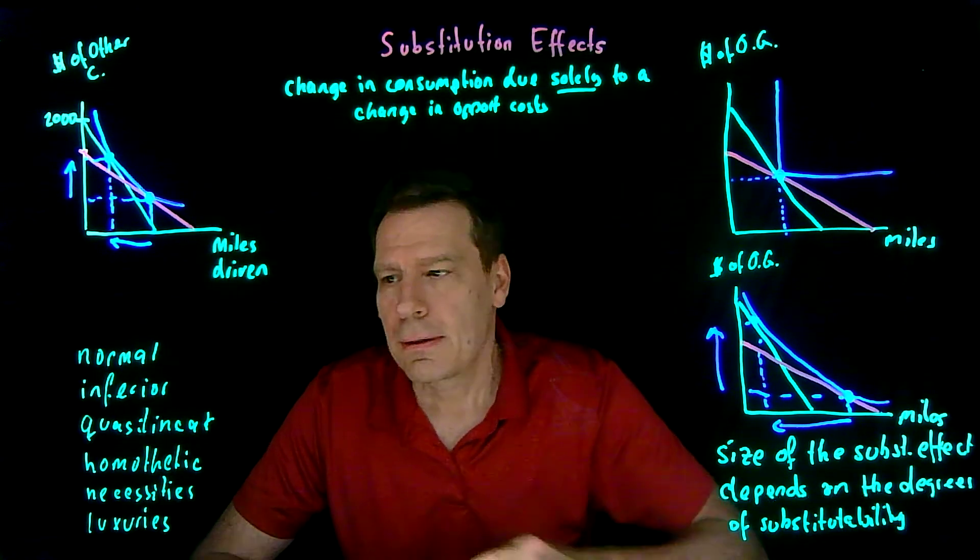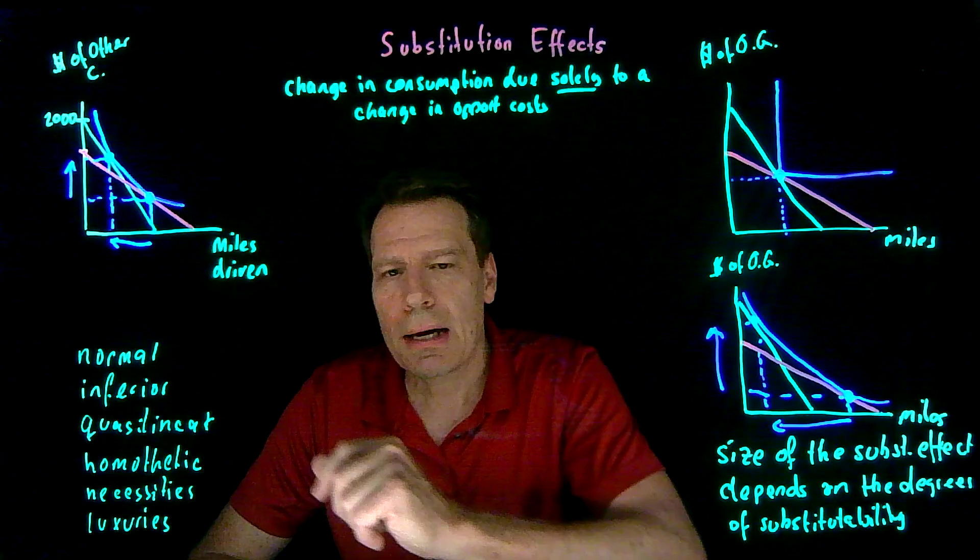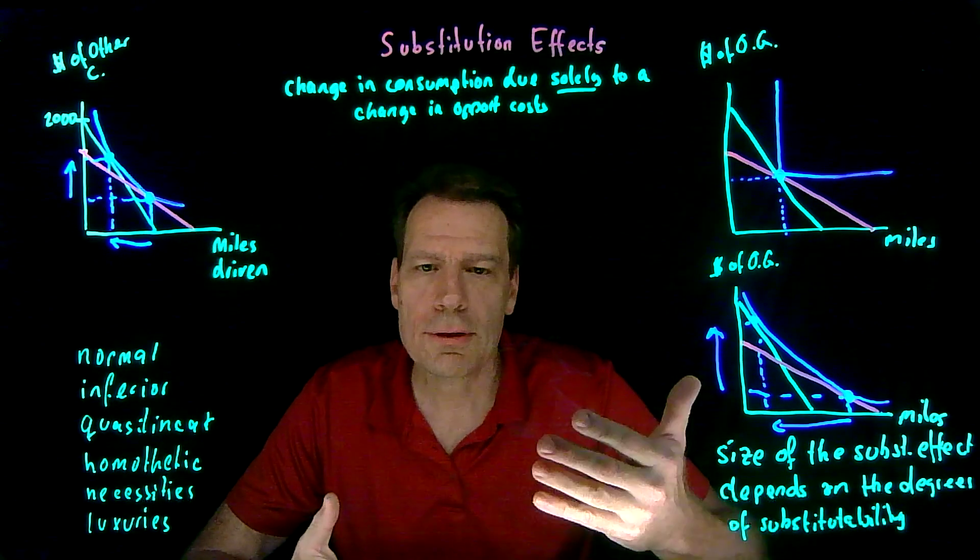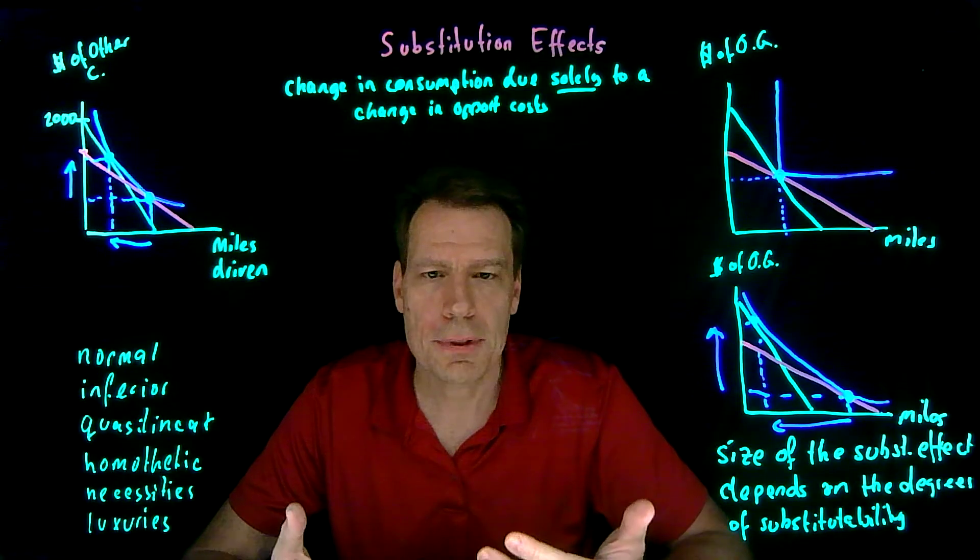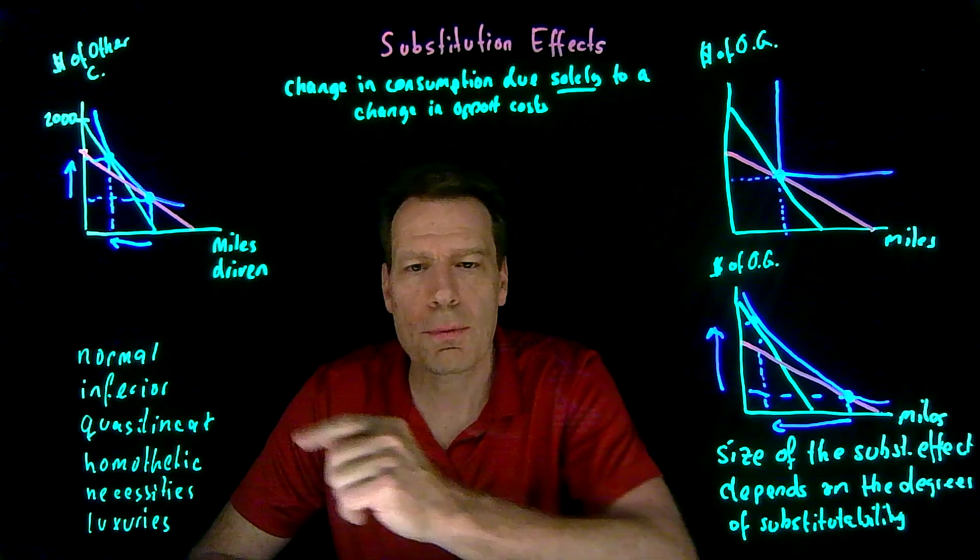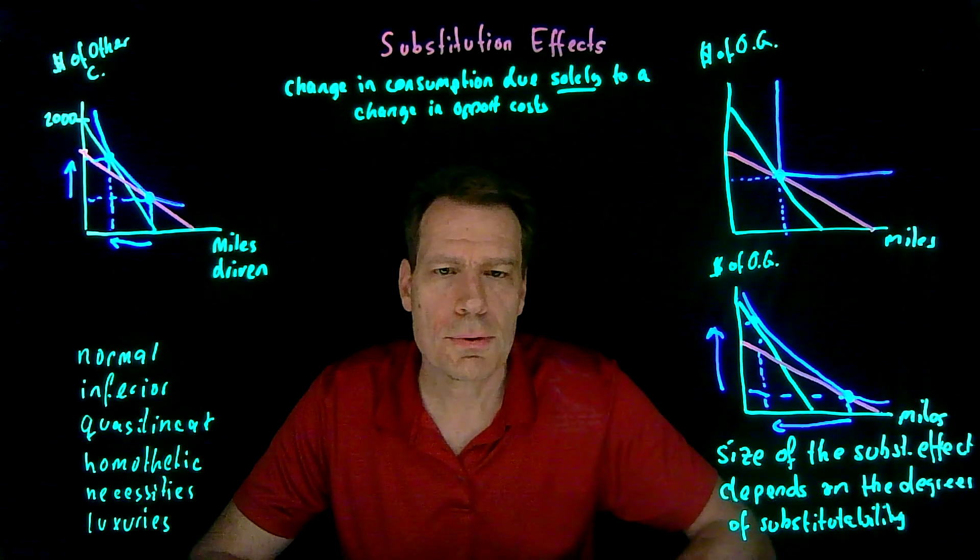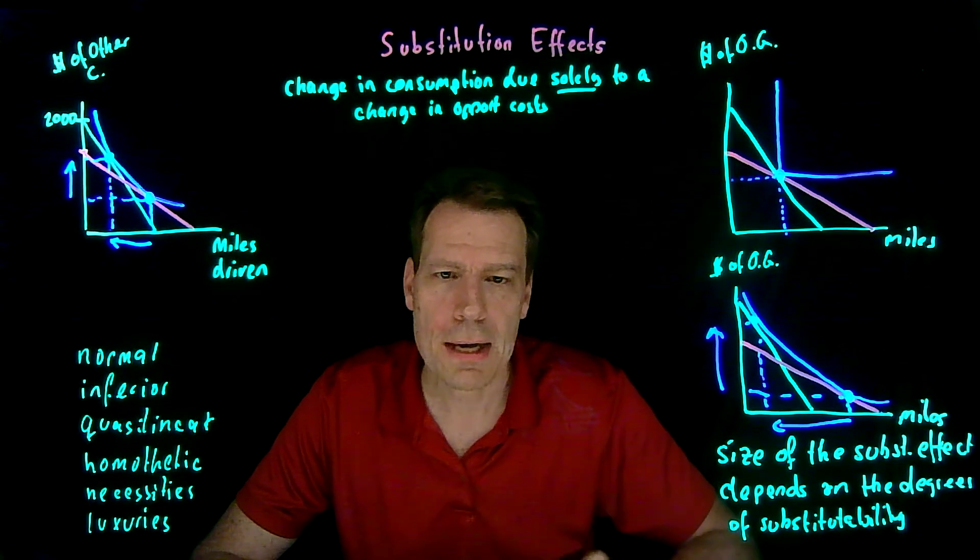For income effects, we needed to know something about how indifference curves within the same indifference map were related to one another. And that helped us define goods like normal, inferior, quasi-linear and so forth. But none of that matters for the substitution effect. Only one thing matters. The degrees of substitutability.